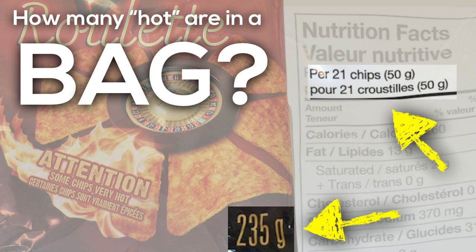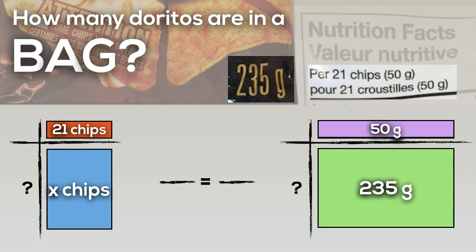In this case, a rate with different units. We can take that information and set up two area models to help us out. Noticing that our ratio or rate is at the top, our 21 chips to 50 grams, or per 50 grams, that means there's X number of chips per 235 grams.